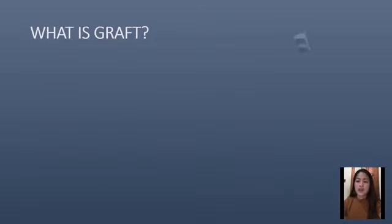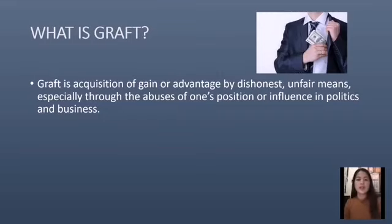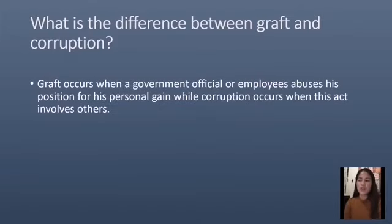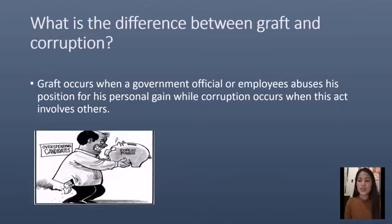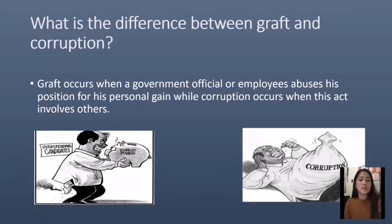Next is graft. What is graft? Graft is the acquisition of gain or advantage by dishonest means, especially through the abuse of one's position or influence in politics and business. Graft occurs when a government official or employee abuses his position for personal gain, while corruption occurs when this act involves others, whether inside or outside the bureaucracy. Although graft and corruption exist in both private and public institutions, most definitions are centered on public offices.